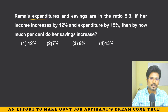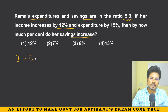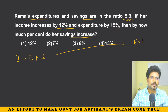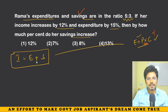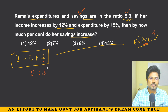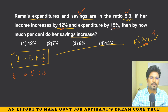Rama's expenditures and savings are in the ratio 5 to 3. If her income increases by 12% and expenditure increases by 15%, how much percent do her savings increase? Remember: income = expenditure + savings. Expenditure is 50, savings is 30, so income is 80. Income increases by 12%.